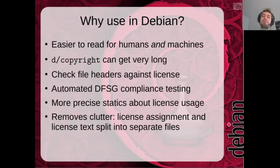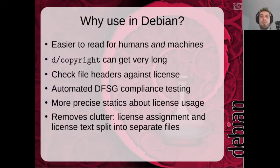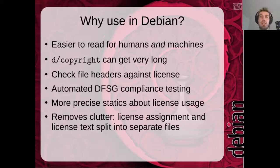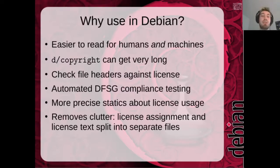If we use SPDX identifiers for the copyright file, we can also, when creating a package with dh_make, simply check for file headers with an SPDX identifier, which is pretty easy to parse. We can automatically fill in the copyright file, making it easier for maintainers. We can also automatically check if a package is DFSG compliant, because we know which licenses are DFSG compliant and which are not.